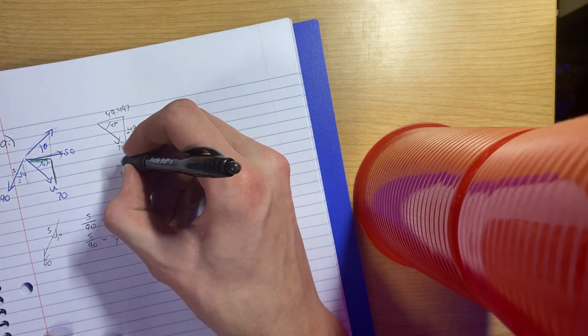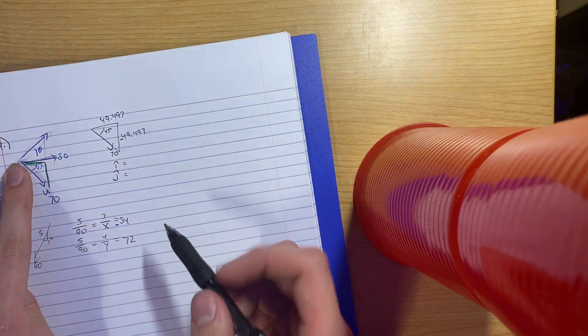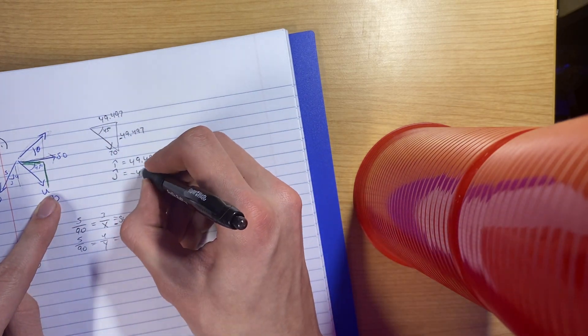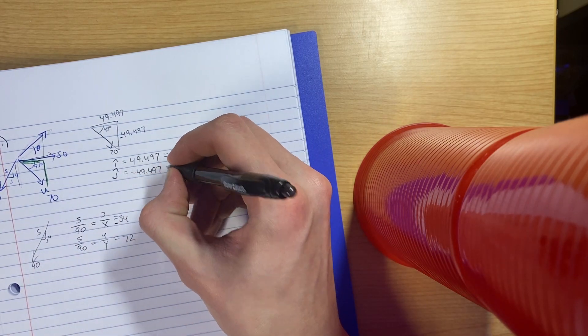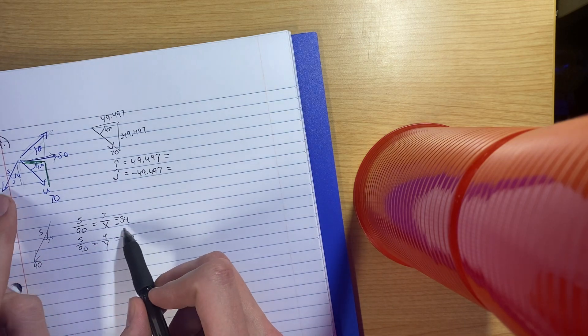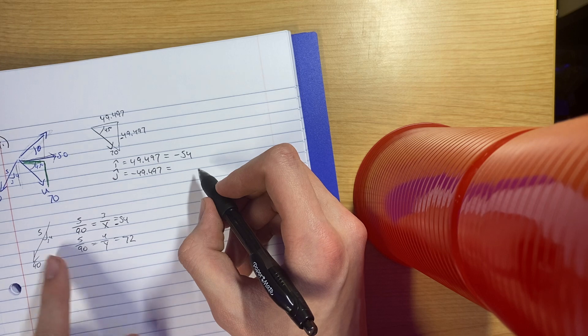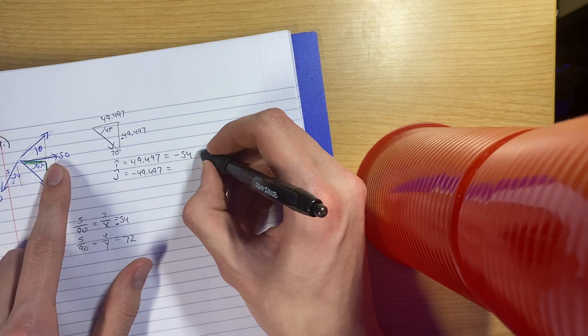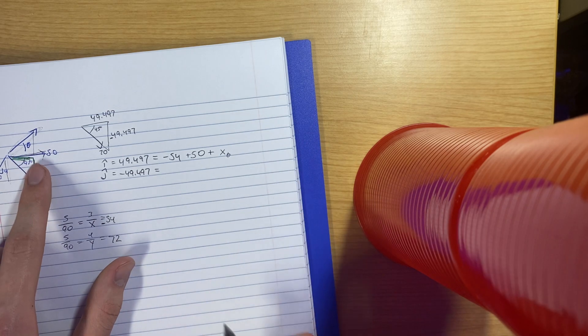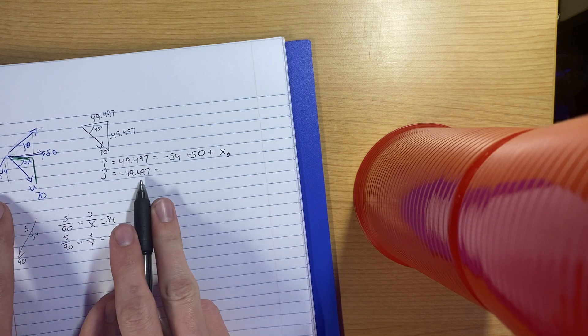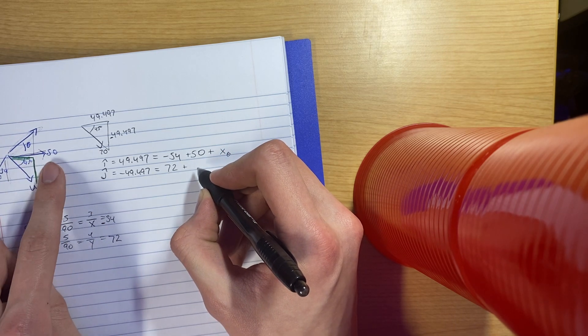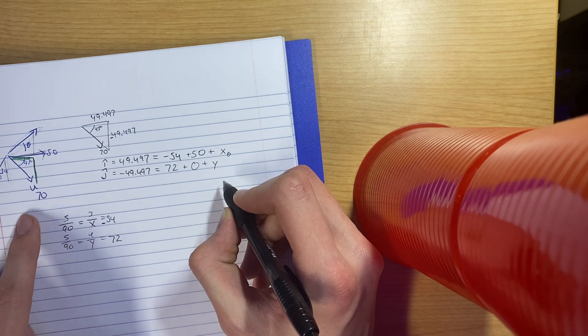Then I made an equation for J hat and for I hat. So I said that I hat has to be 49.497 from our resultant. And then I took the sum of all my X components and the sum of all my Y components. So we said that our X component of this one was negative 54. Our X component of this one was only a positive 50. Plus our X of this one that we don't know, right? Then our Y component has to be equal to this. We had 72, plus this one is 0, right? Plus our other Y component here has to be equal to this.